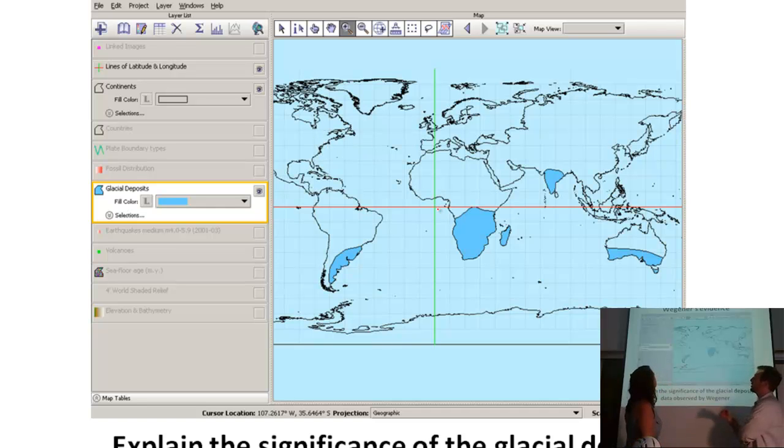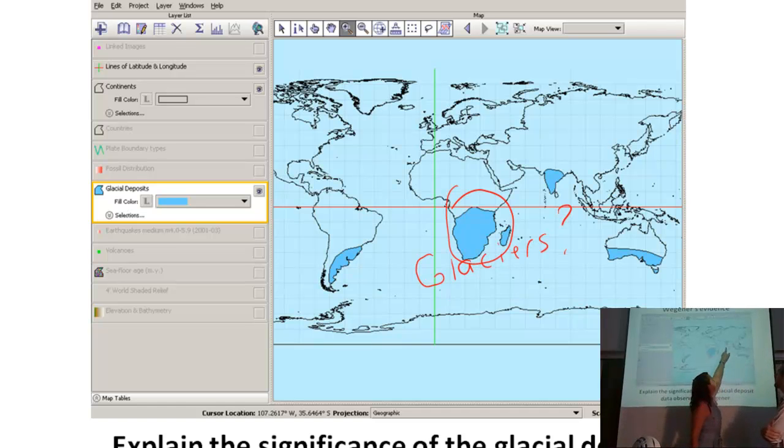So, I think we have kind of a conundrum here. Because we're going to look at some more evidence. And we're going to start asking some questions about this same evidence. You're going to see some similarities. Now, we turned on a new layer. We turned off the fossils. And now we've got on the glacial deposits. So, these are rocks that are found in areas where glaciers typically are.